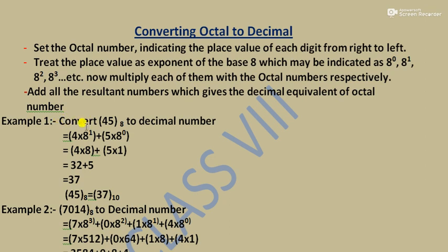We will explain this with an example. In this example, 45 is an octal number which we will convert to a decimal number. The digits are 4 and 5. We calculate: 4 into 8 plus 5 into 8.